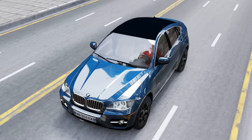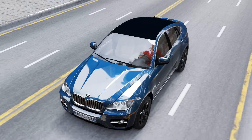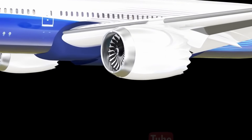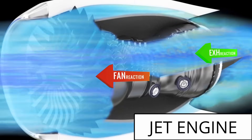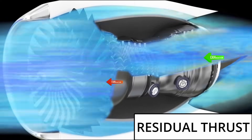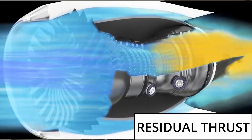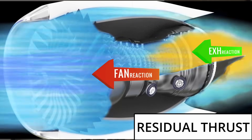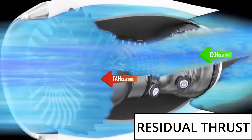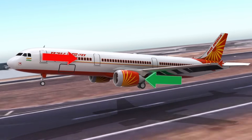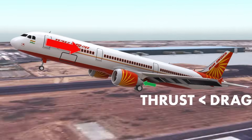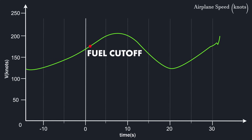Jet engines are not like IC engines. In IC engines, after the fuel cutoff, the vehicle decelerates immediately. But jet engines work on a different principle — the principle of reaction force. Even if the fuel supply is cut, the spinning components of the jet engine will keep on producing thrust for a few more seconds. This is known as residual thrust. Especially for a turbofan engine, the residual thrust is quite significant. In short, the thrust does not become zero immediately after the fuel cutoff — it gradually decreases and becomes zero. This means even after fuel cutoff, the airplane speed will keep on increasing for a few more seconds, until the thrust becomes lesser than the drag force. The airplane speed kept on increasing even after the fuel cutoff and achieved a maximum speed of 206 knots. The fuel was cut off to both engines exactly after one second of takeoff.